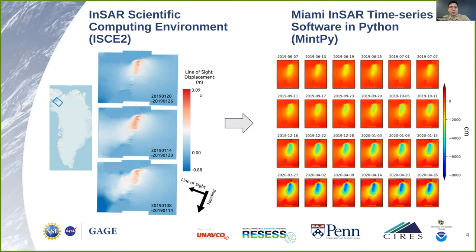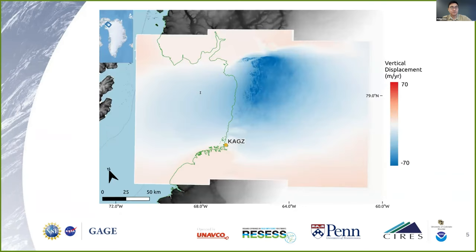These interferograms are converted into a time series of deformation over multiple years using MintPy. The figure on the right is one such time series of surface displacement, all referenced to January 2019. Finally, MintPy estimates the velocity over our monitoring period, giving us a cumulative velocity map. Like the one produced last year, all motion in this velocity map is referenced to a stable reference point — in this case, the yellow GNSS station called CAGZ.